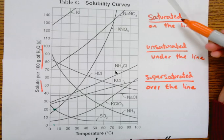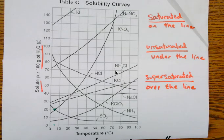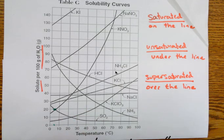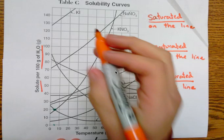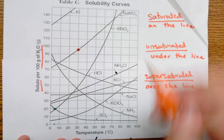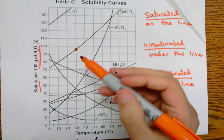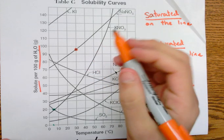If you have a saturated solution, what that means is you have as much solute in the solvent as possible, and all of it is dissolved. So you can't add any more, but everything will fully dissolve. An example of this would be any point on one of these lines. I'm going to pick this point right here — what would I need to make a saturated solution?